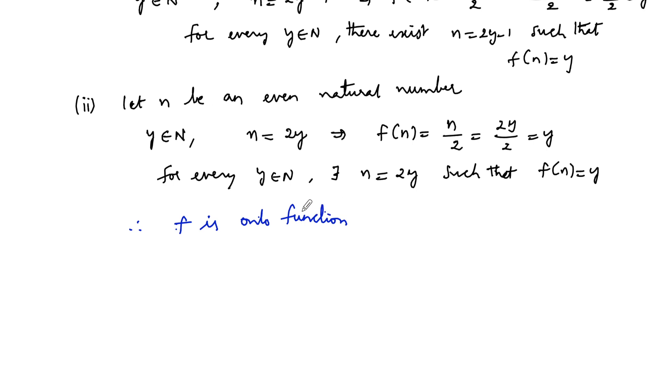Therefore, f is onto but f is not one-to-one, and hence we can conclude that f is not bijective because it is not one-to-one.